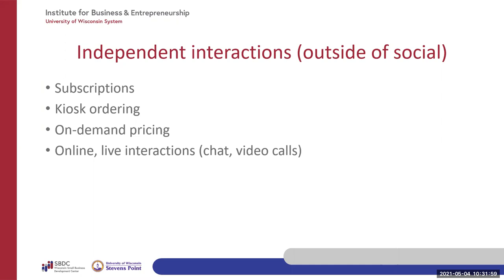Kiosk ordering is another one — a lot of McDonald's now have kiosks where you punch in your own order. Even some small businesses are using this through things like Toast, using an iPad to place orders. On-demand pricing is another consideration — a lot of Gen Z expects to go to a website, use some sort of tool, and get a price. Gen Z in general wants to go to a website and find a price; they don't want to have to talk to a person.